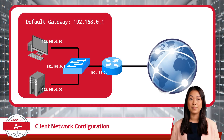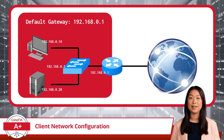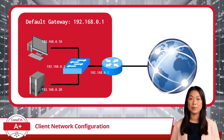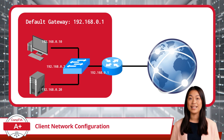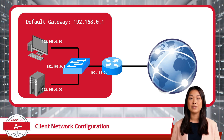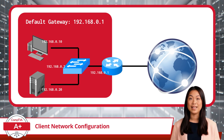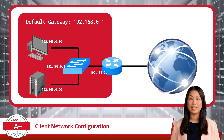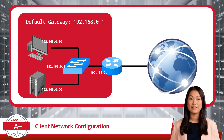A default gateway, in the context of a computer network, is a router or networking device that connects a local network to the internet or other networks. It acts as a doorway, allowing your computer or other network devices to send or receive data from outside the local network. When a device on your network wants to access a website, stream a video, or download a file from the internet, it sends that request to the default gateway.